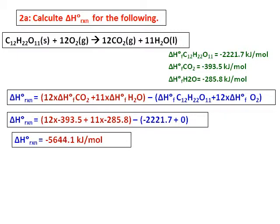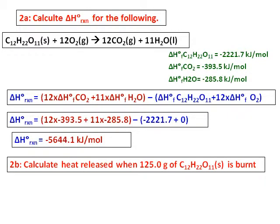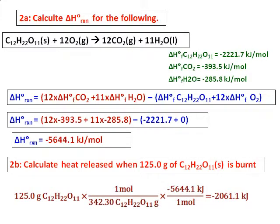This question has a second part: calculate the heat released when 125.0 grams of sucrose C₁₂H₂₂O₁₁ is burned. Start with 125.0 grams of sucrose, use the molar mass of 342.30 g/mol, and from the equation one mole of sucrose releases the heat of 5644.1 kJ that we just calculated. Substitute all values to get the answer of 2065 kJ.